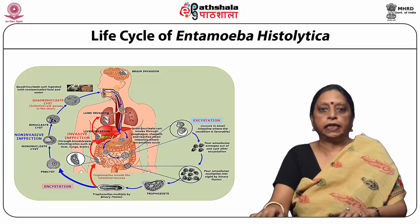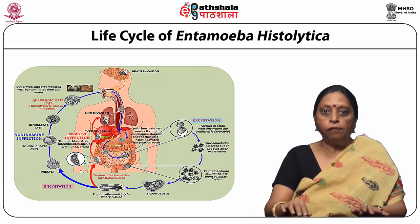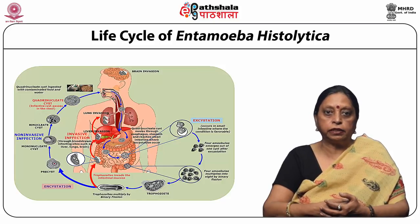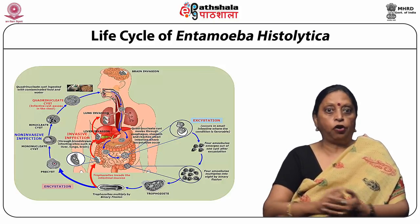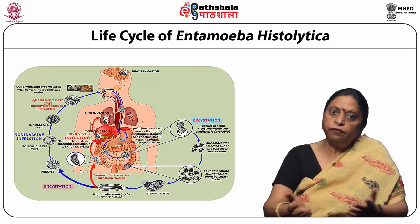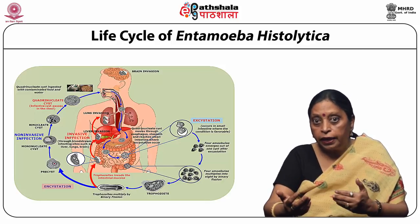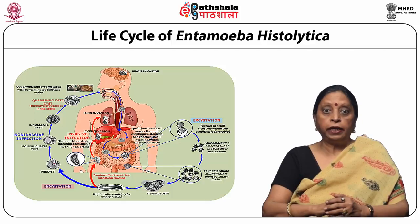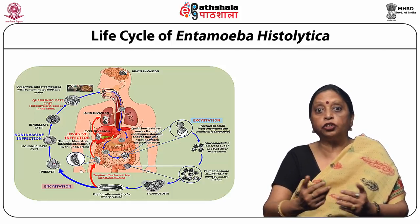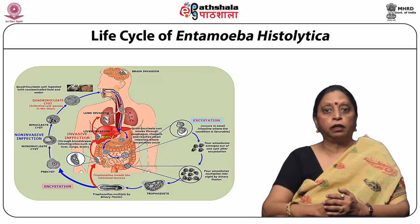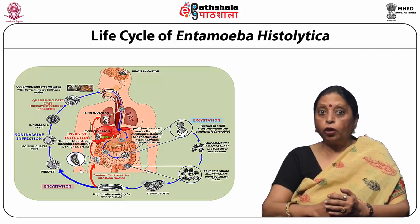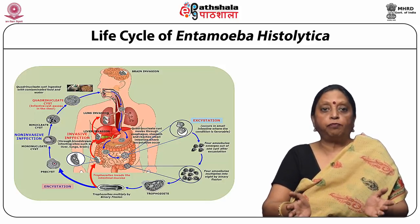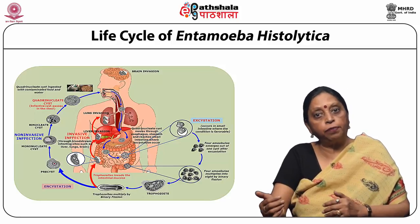Trophozoites are also voided with cysts in the feces, but cannot survive outside the host for more than an hour. Even if ingested by another human being during this period, they are killed in the body — because they cannot survive in the acidic environment of the stomach. An important point to note is that both excystation and encystment are not reproductive processes. Encystment and excystation can take place in the same host; another host is required only for the perpetuation of the species.